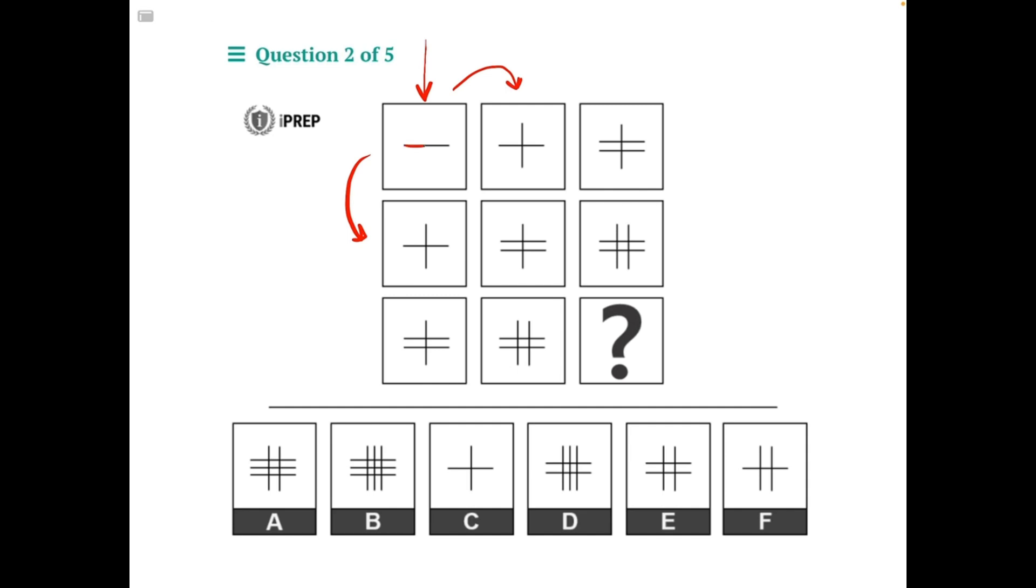We start with one horizontal line, and then in both the element to the immediate right of that and the element to the immediate bottom of that, we add a vertical line.